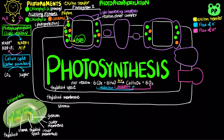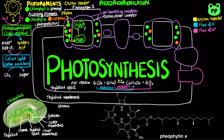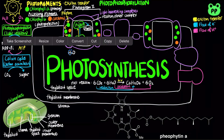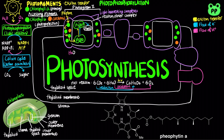Excitation of P680 donates electrons to the primary electron acceptor, pheophytin. The electron removed from P680 is replaced by an electron obtained from the oxidation of water, releasing oxygen as a byproduct.